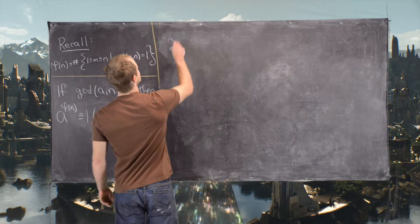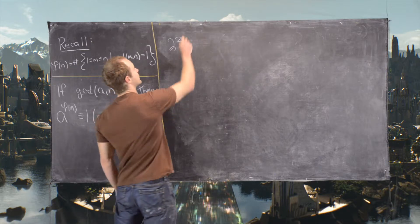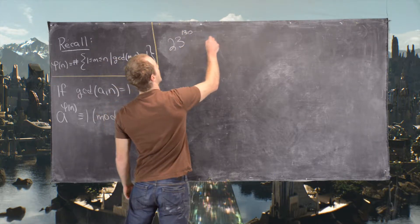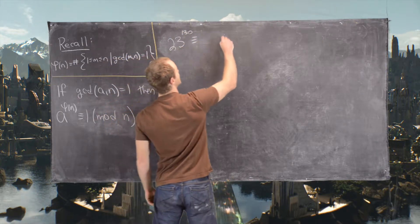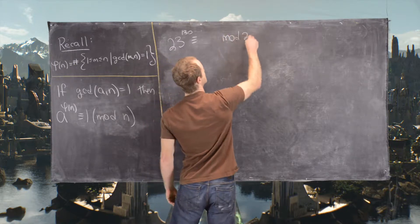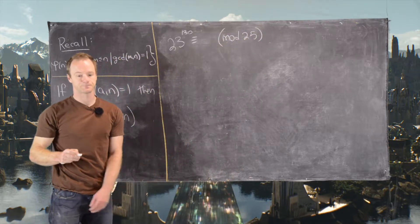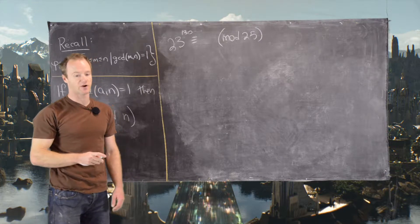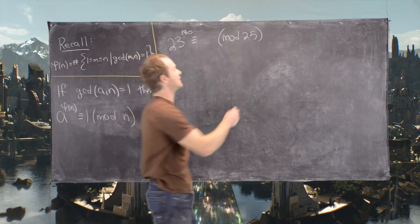We want to look at 23 to the 130 is congruent to something mod 25. So the first thing that we need to calculate is what is phi of 25.